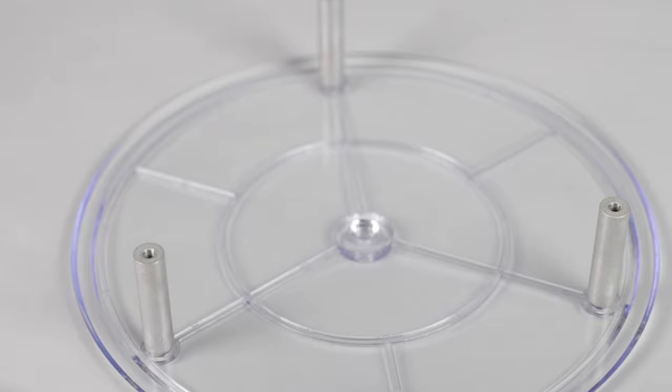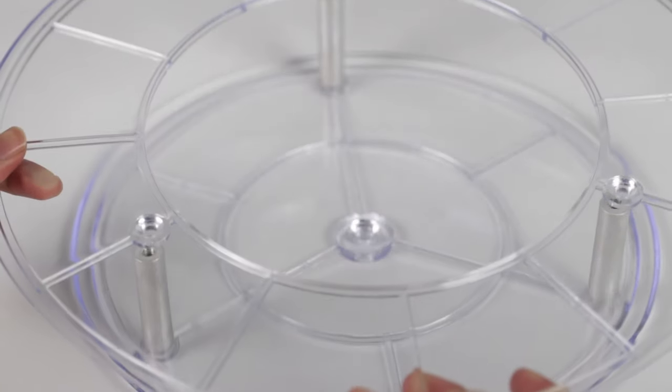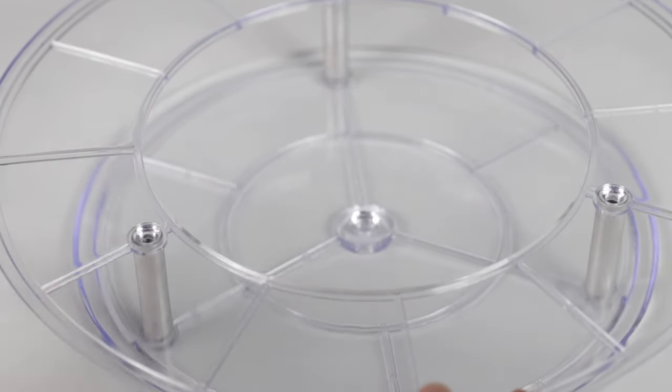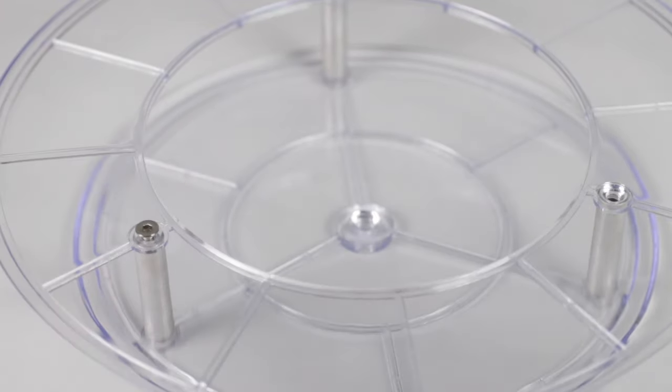Place Part N on top, and making sure the side with raised edges is facing downwards, secure in place using the remaining screws and hex key.